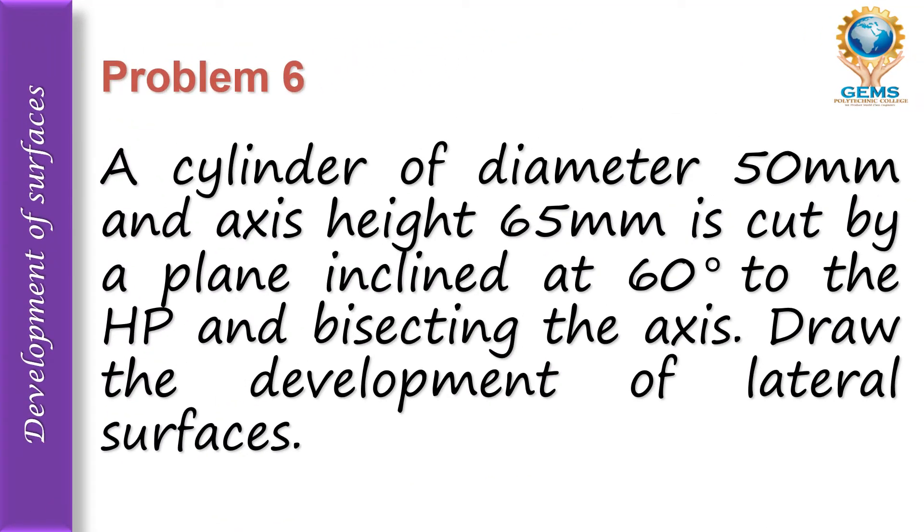Problem six: A cylinder of diameter 50mm and axis height 65mm is cut by a plane inclined at 60 degrees to the horizontal plane and bisecting the axis. Draw the development of lateral surfaces. The diameter of the cylinder is 50mm and the height is 65mm.